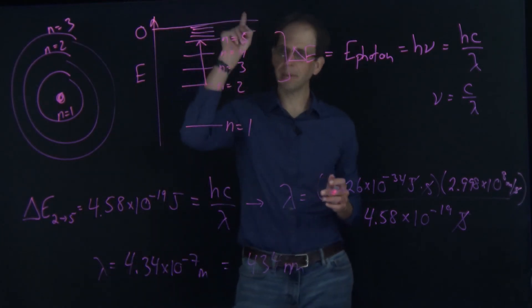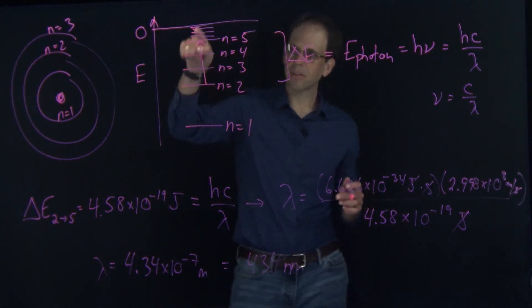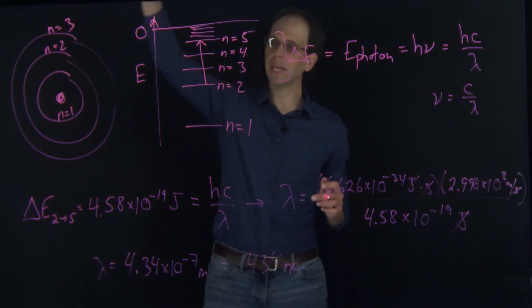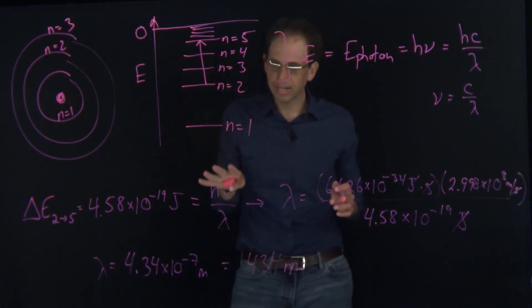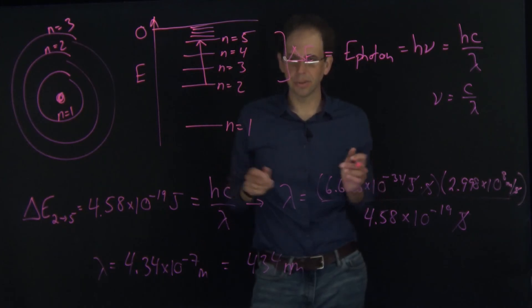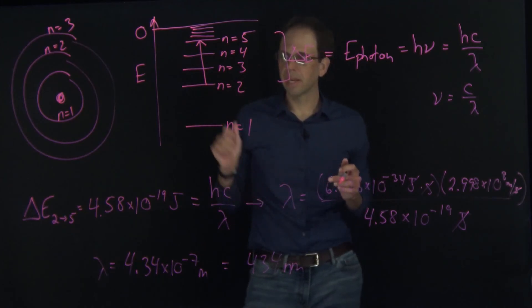So if I want to excite my hydrogen atom electron from the n equals 2 orbit up to the n equals 5 one, I need a 434 nanometer light source to do that.